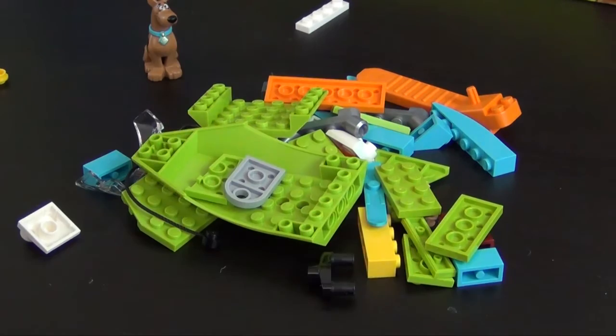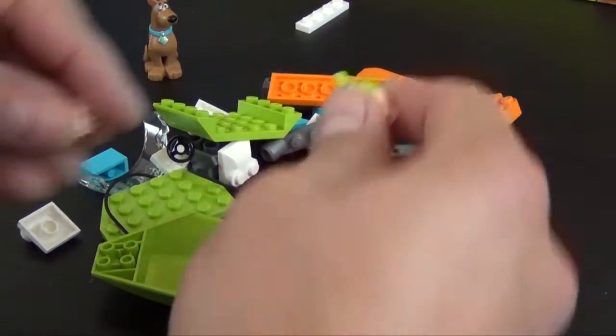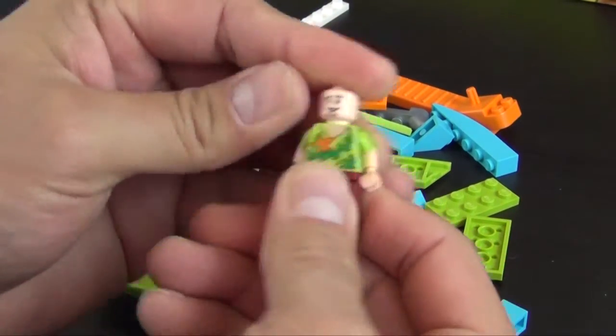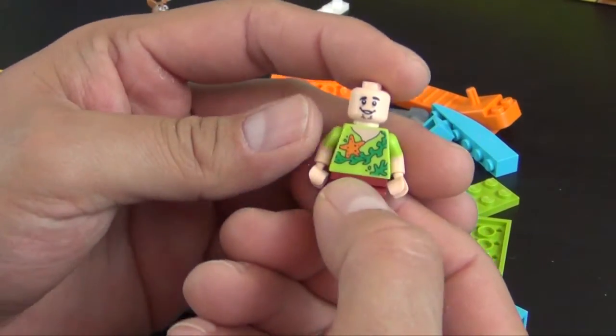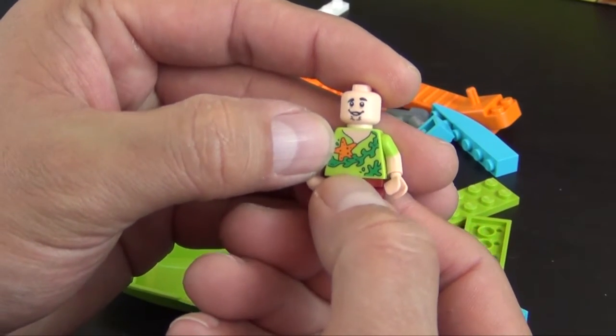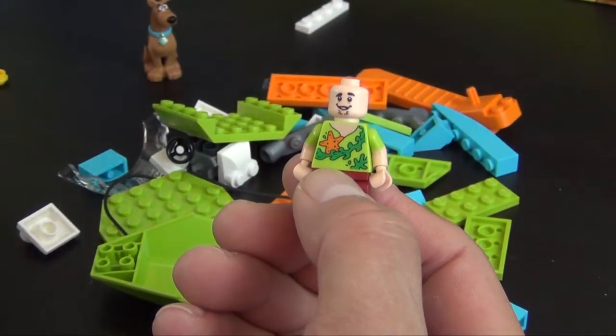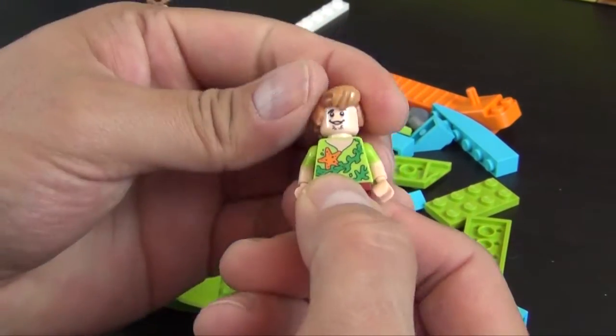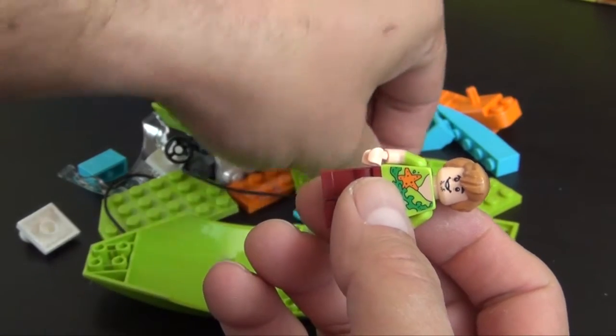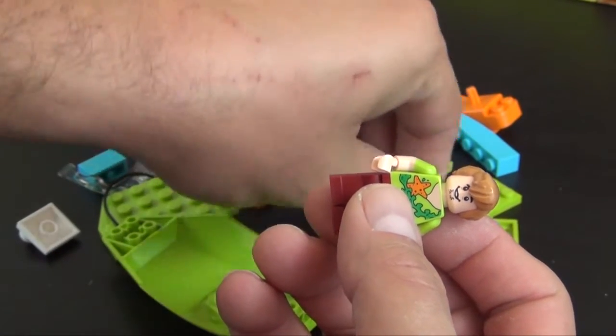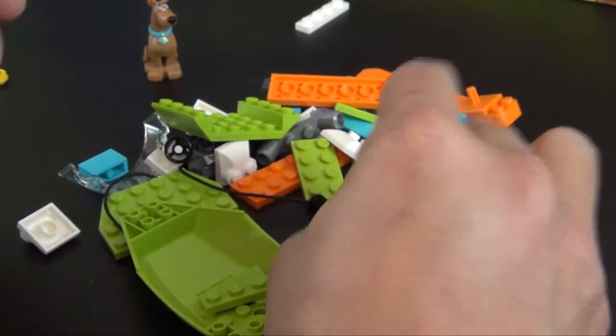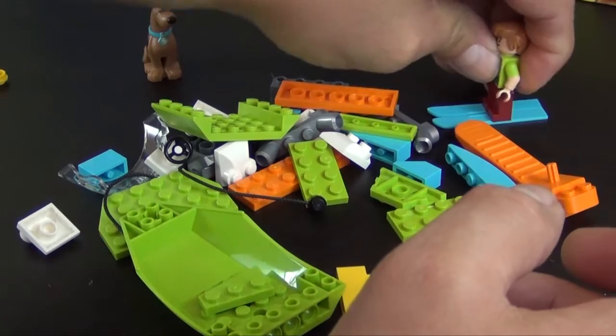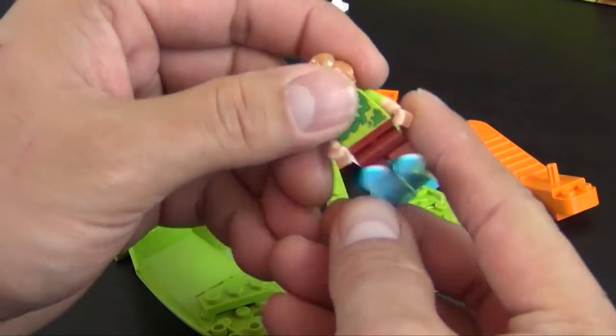We have Shaggy in this bag as well. This version of him has the green shirt with the seaweed and a starfish stuck in the seaweed. He's water skiing, so that's what these light blue skis are for. I can't seem to pick them up, so I'll just stick his legs on.